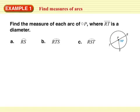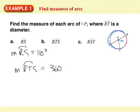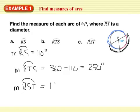Find the measure of each arc of circle P, where RT is a diameter. RT is a diameter, so arc RS, the measure of RS equals 110 degrees. The measure of RTS, so if RS is right here, RTS is the major arc. So the measure of arc RTS is 360 minus 110, or 250 degrees. The measure of arc RST, which would be right here. If I know RT is a diameter, then RST would be a semicircle. The measure of arc RST is 180 degrees.